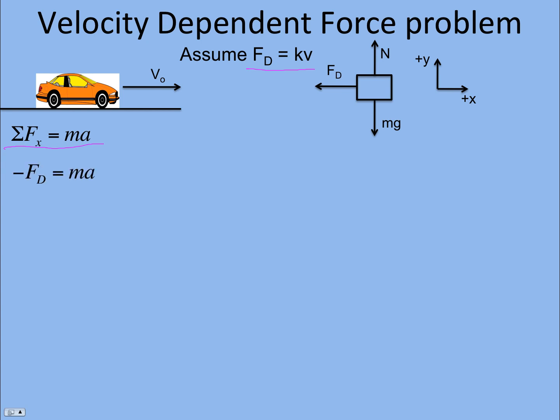We have one force, the force of drag, and it is in the negative direction — picking positive x to the right, and the same with velocity to the right. This is how we make it a differential equation: we replace the acceleration with dv/dt. Notice the force of drag I've replaced with kv, so I have everything written in terms of the velocity. This is what makes it solvable. That's Newton's second law written as a differential equation — essentially you replace a with dv/dt. That will get you some points, so if you just stopped here, you'd be fine.